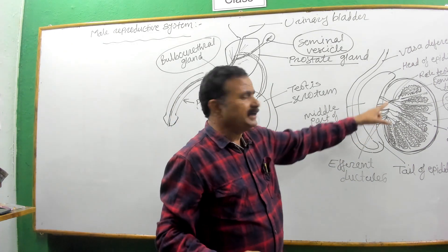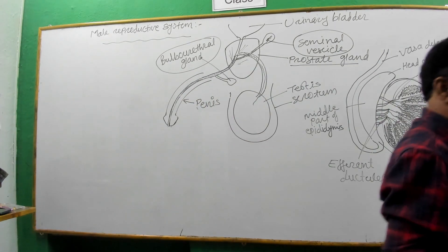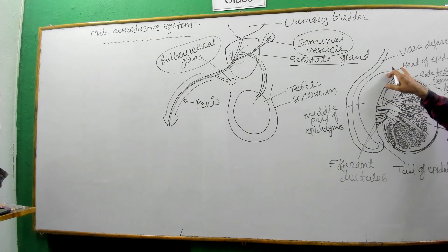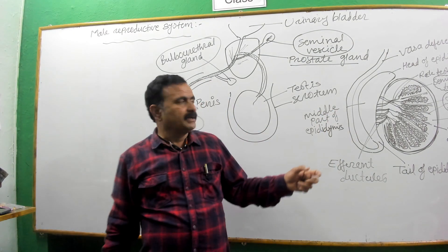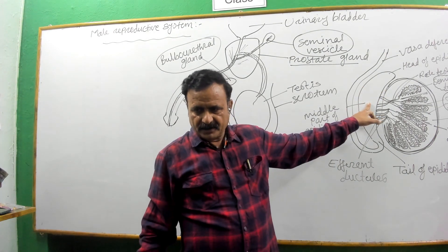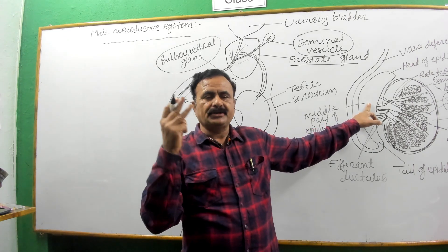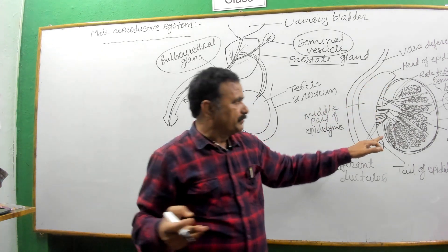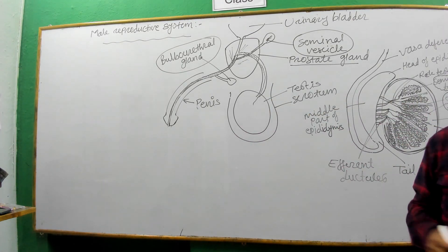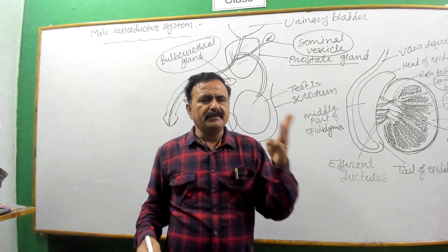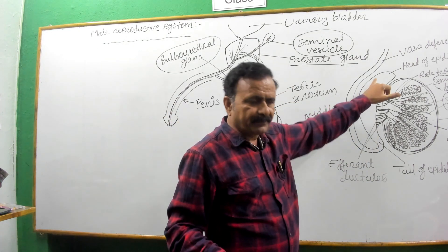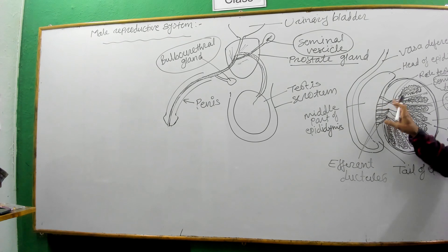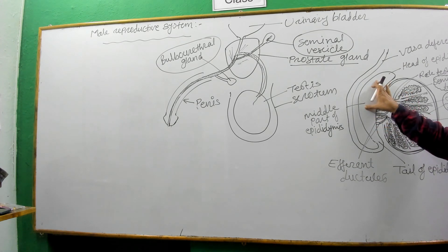From the rete testis, the sperm cells move further ahead and enter into broader vessels called the efferent ductules. Through the efferent ductules, they enter a large, cylindrical structure called the epididymis. The epididymis is divided into three major parts: the head region, the middle piece, and the tail region.